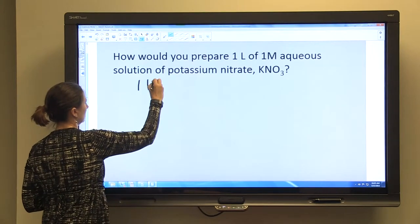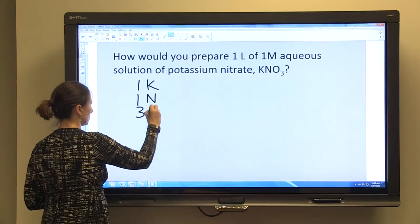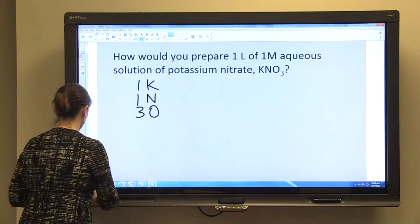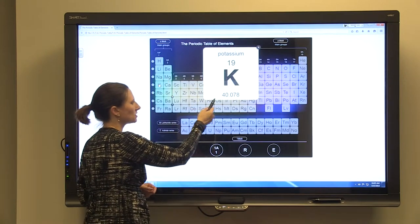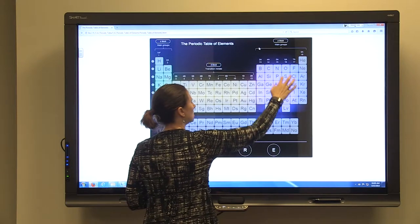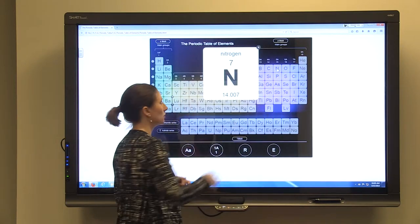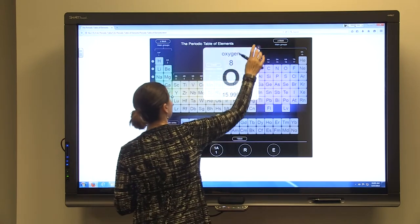So we have one potassium, one nitrogen, and three oxygen atoms. We're going to use our periodic table. See that potassium is 40.078, nitrogen is 14.007, and oxygen is 15.999.